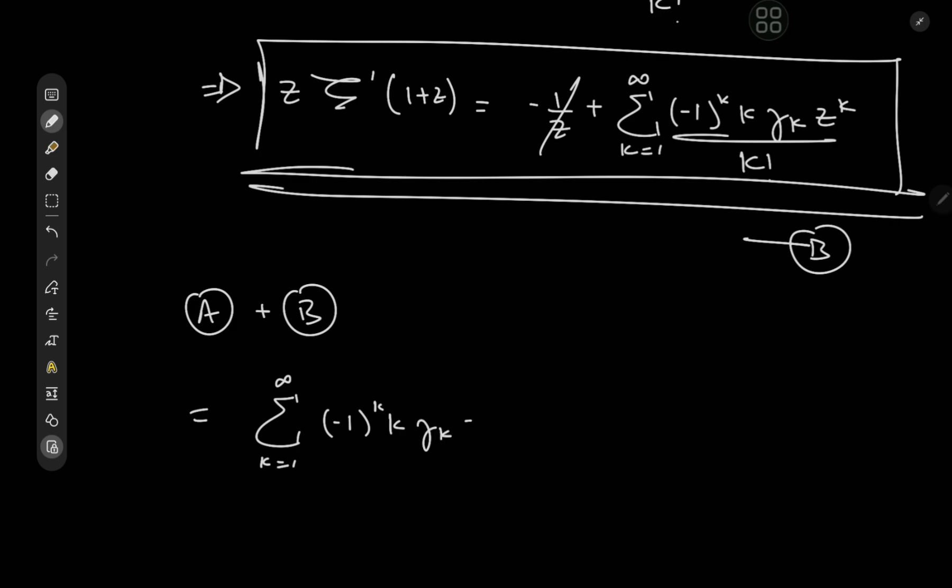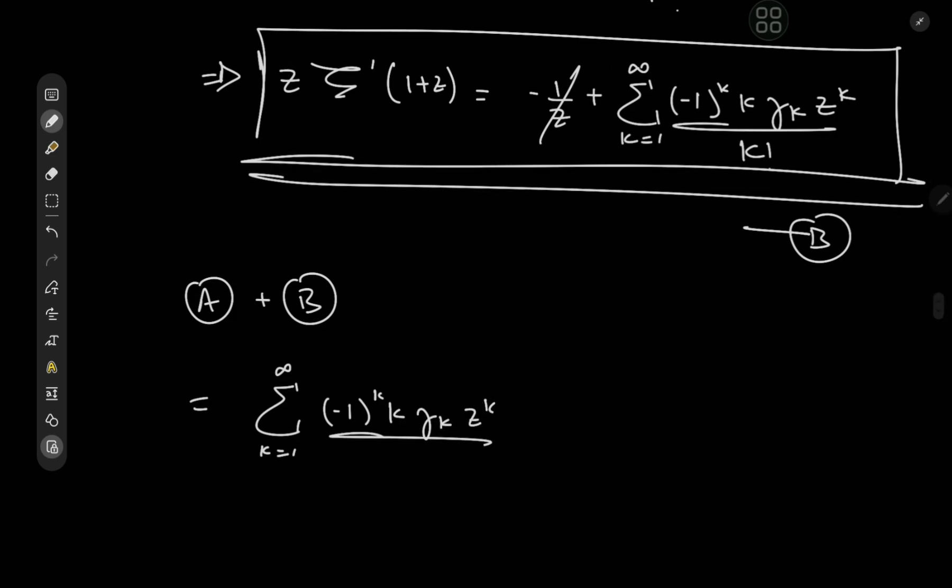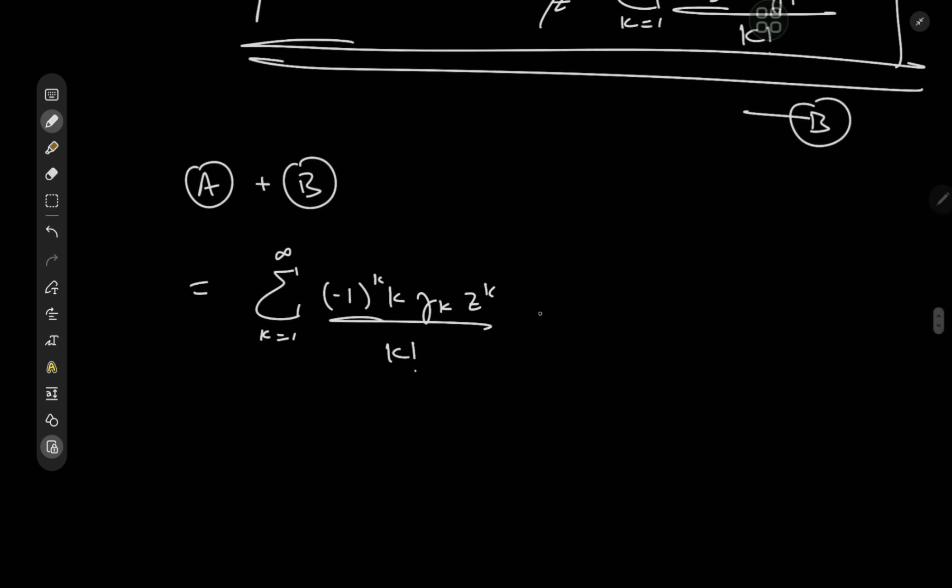So that means we're left with the sum over k from 1 to ∞ of (-1)^k k γ_k z^k/k! plus the sum over k from 0 to ∞ of (-1)^k γ_k z^k/k!.